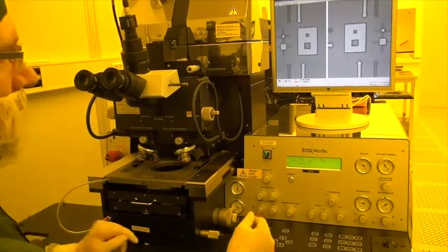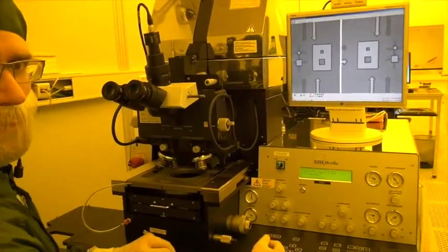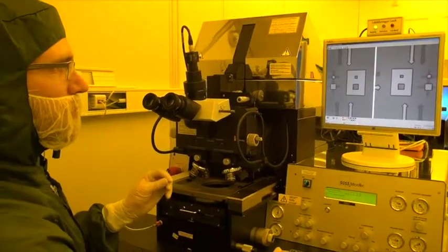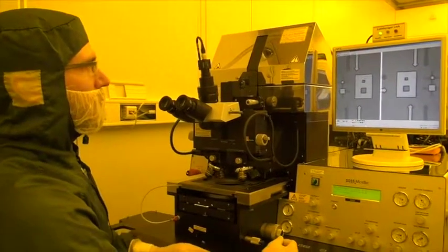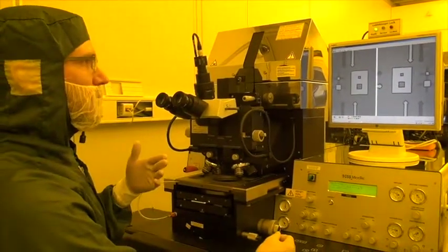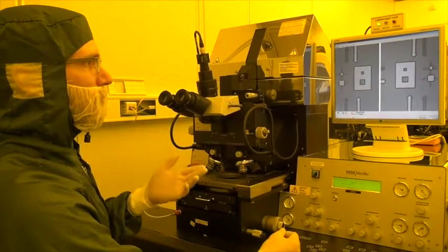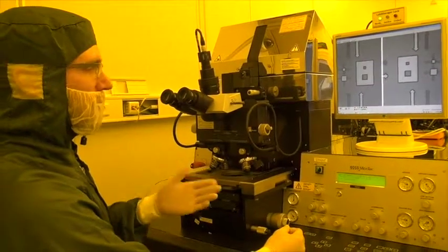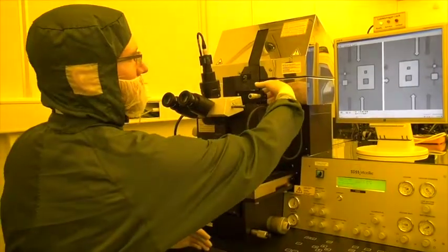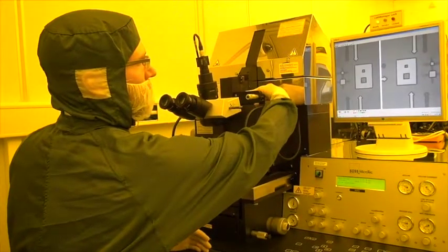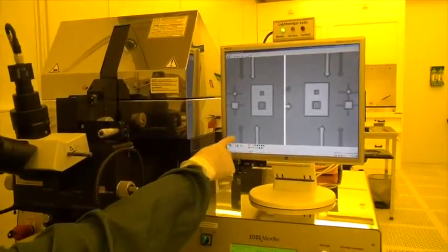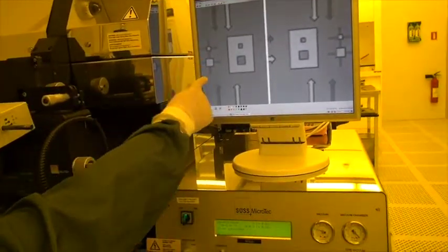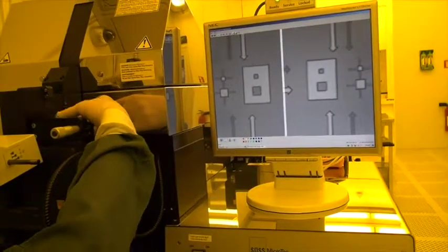We set an alignment gap of 30 micron, which means that there is a separation between the substrate and the mask of 30 microns at this moment. Which means it can sometimes be difficult to have focus both on the substrate and on the mask. And you can see on the screen that if I adjust the focus, I can get a much clearer view of the substrate but then the mask comes out of focus.